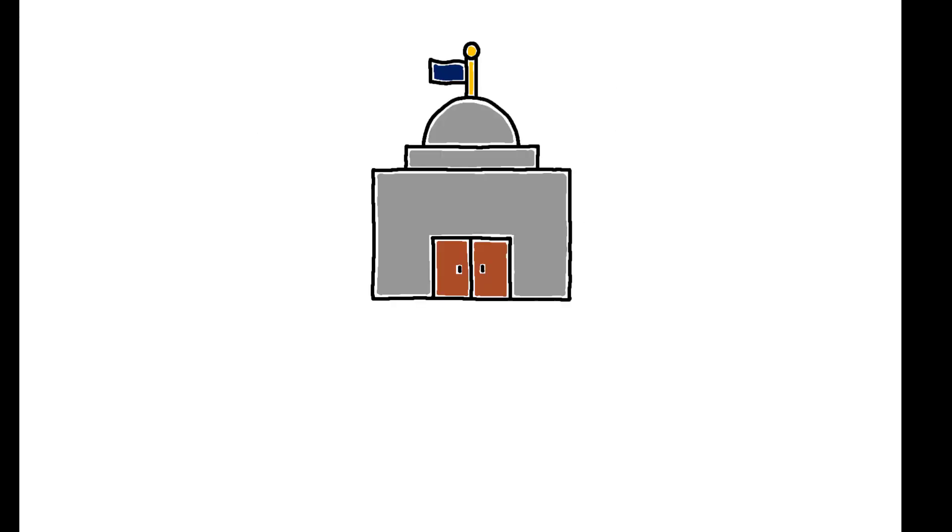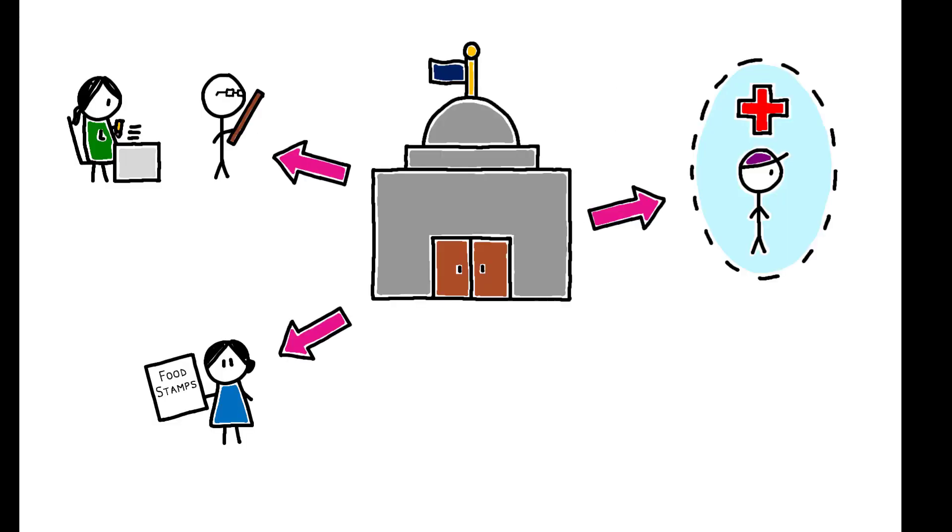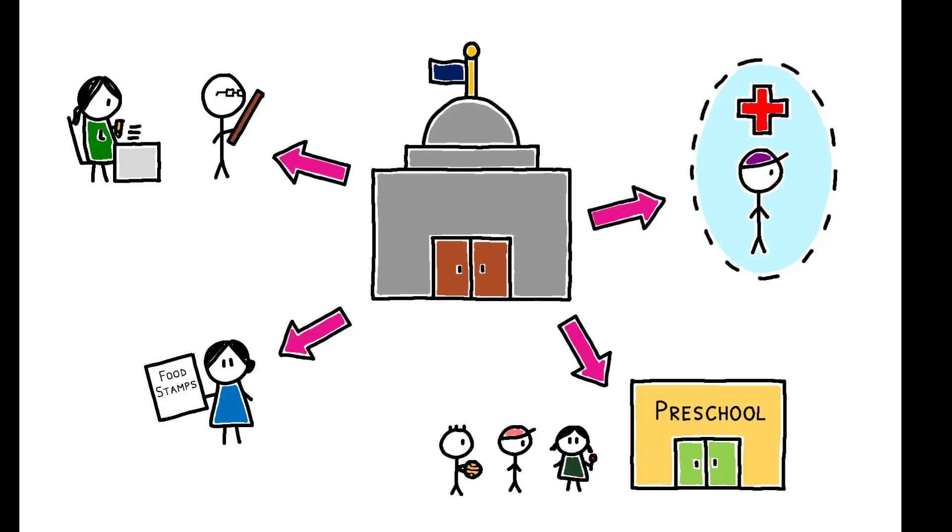In 1965, as part of the War on Poverty, the U.S. launched an experiment in providing widespread public preschool for three- to five-year-olds.